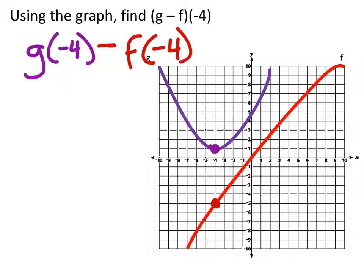g of negative 4 is 1 - that's the y value there, sorry - minus f of negative 4, which is negative 5.